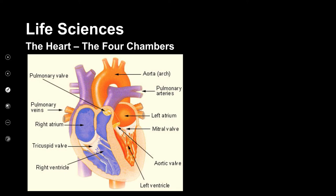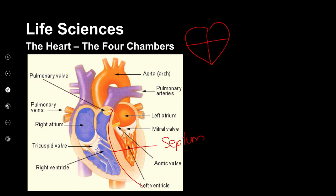Did you notice those valves were so noticeable? Probably the most noticeable part of the internal structure. The heart has a left and a right-hand side. We also have a top and a bottom. The left side and the right side is separated by a septum. The top chambers, on both left and right, are going to be called my atrium. And the bottom ones — my bottom chambers — are going to be my right and my left ventricle.